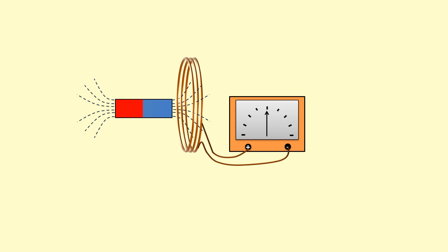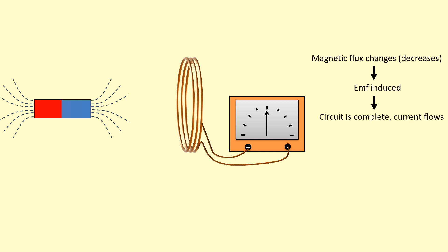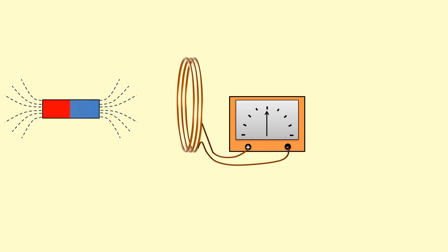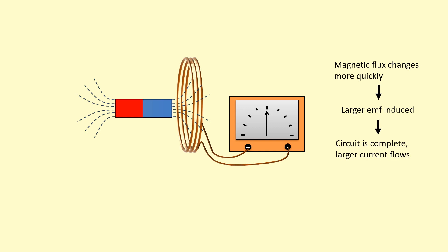That change can be an increase or a decrease. When I move this magnet away, the magnetic flux linkage through the coil is decreasing, so there was a reading on the ammeter. A change in magnetic flux linkage induces an EMF, and if the circuit is complete, current flows. The emphasis is on change — if there's no change, there's no EMF induced. When I bring the magnet closer but do it faster, the reading on the ammeter is much larger. This is because when the flux changes more quickly, a larger EMF is induced and so there's a larger current.